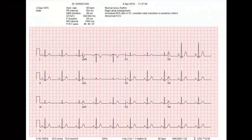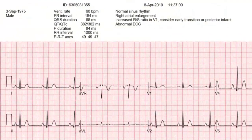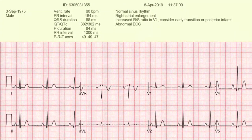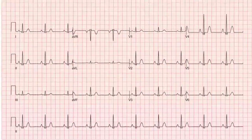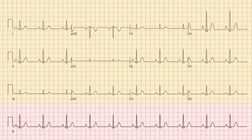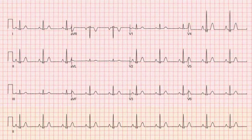The report contains the patient's details, the average measurements and the system interpretation with a standard resting ECG report format. Beneath this is 2.5 seconds of every lead view with a 10-second rhythm strip of lead 2 along the bottom.